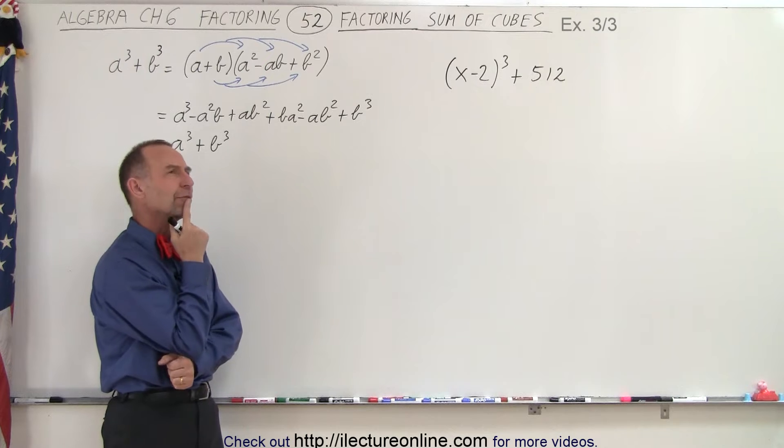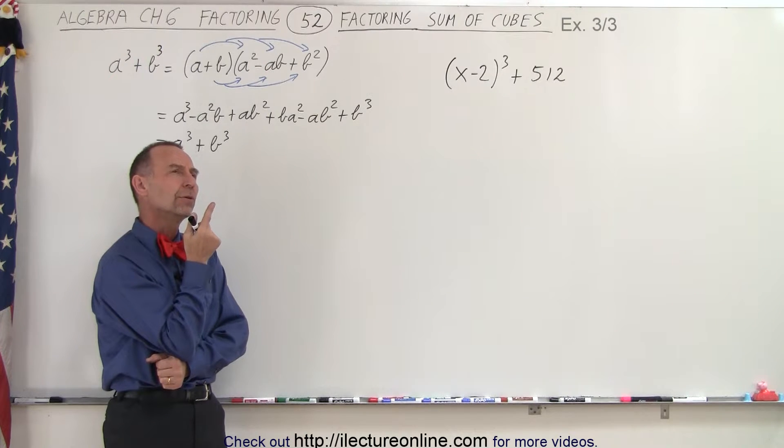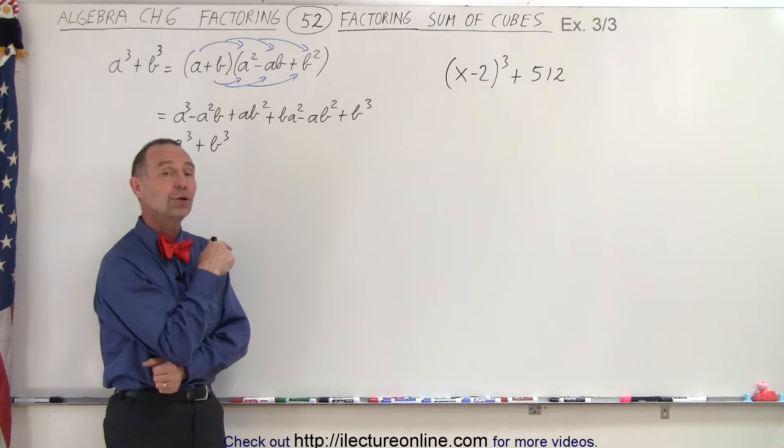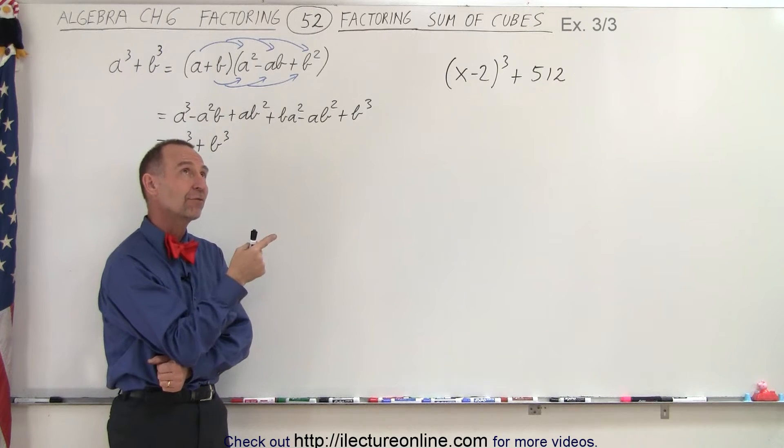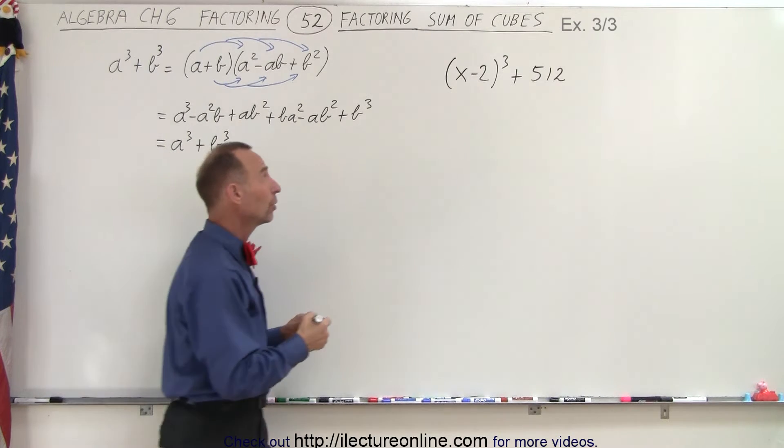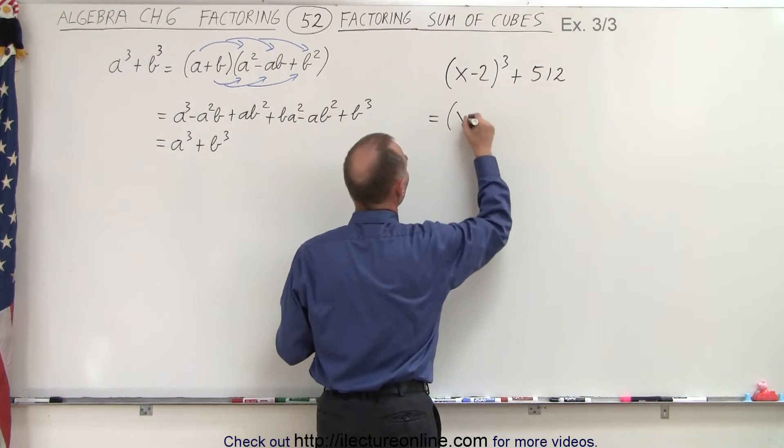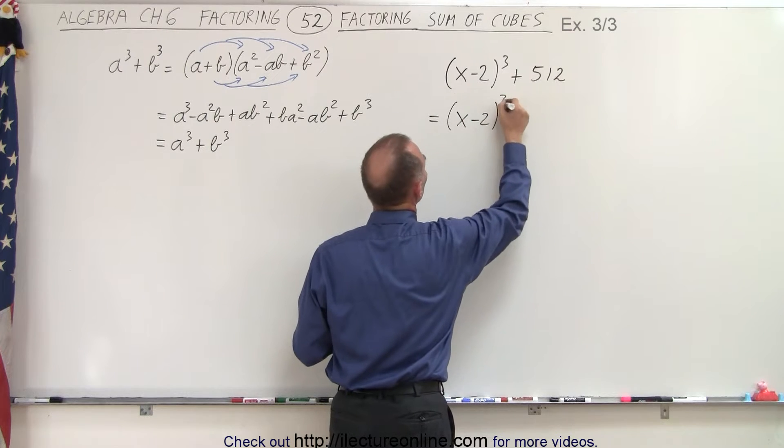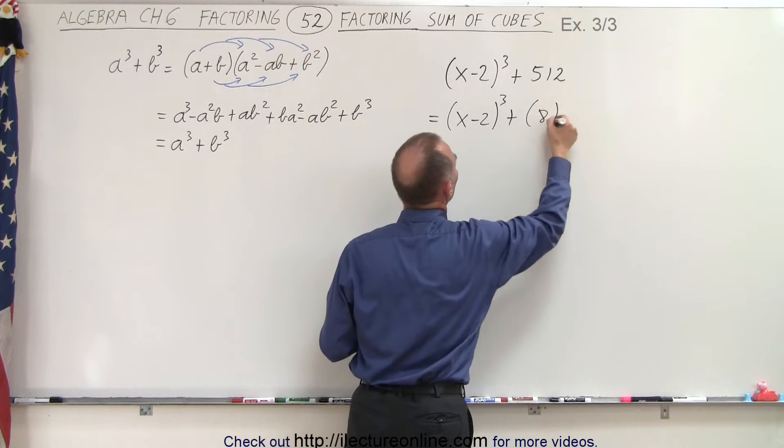But then you realize, wait a minute, 512... that looks like it could be 8 cubed. 8 times 8 is 64, 64 times 8 is indeed 512. So you can rewrite this as the quantity (x-2)³ + 8³.